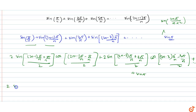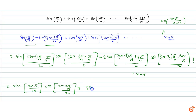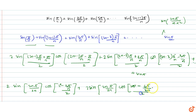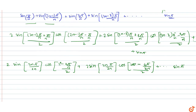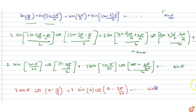Simplifying, the two terms inside sin cancel out, giving 2·sin(2nπ/2n) · cos((2π/n)/2) + 2·sin(2nπ/2n) · cos((2π − 6π/n)/2) + ... which becomes 2·sin(π)·cos(π − π/n) + 2·sin(π)·cos(π − 3π/2n). Since sin(π) = 0, all terms become 0.